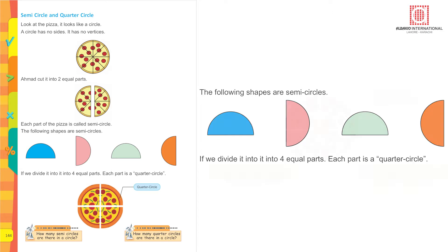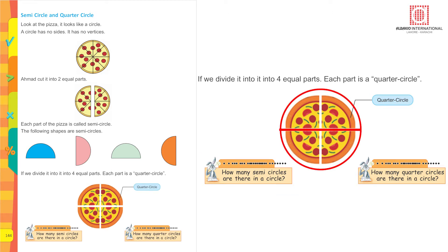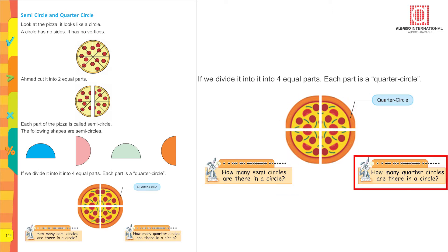If we divide it into four equal parts, each part is a quarter circle. Look at the picture — each part of the pizza is a quarter circle because the pizza is divided into four parts. How many semicircles are in a circle? There are two semicircles. How many quarter circles are in a circle? There are four quarter circles in a complete circle.